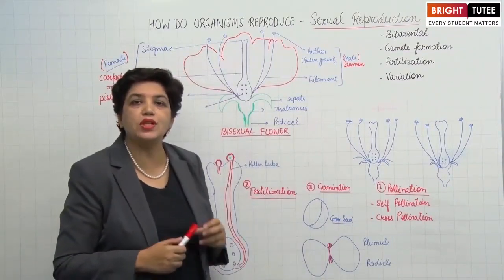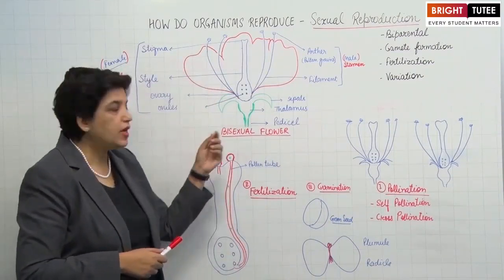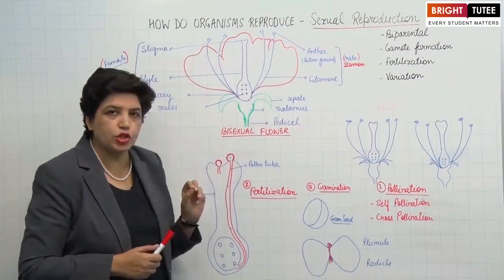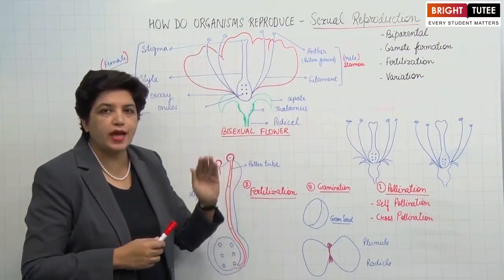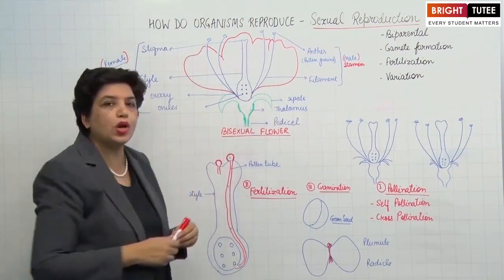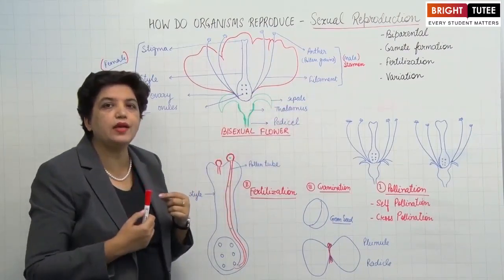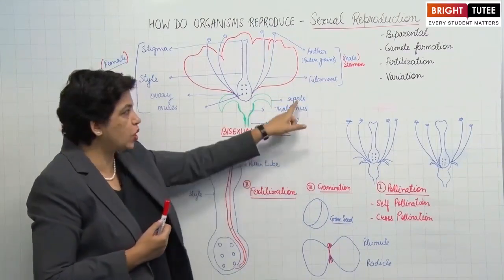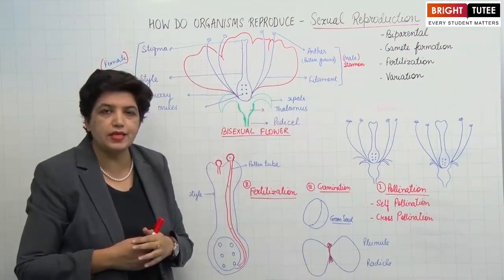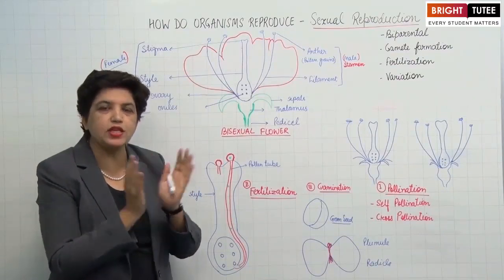Now we will study sexual reproduction in flowering plants. Let us study in detail the structure of a bisexual flower. The pedicel is the stalk-like structure through which the flower is attached to the branch. There is a swollen part called the thalamus. After this, the first layer is the green colored leaf-like tiny structures called sepals.